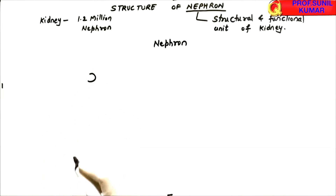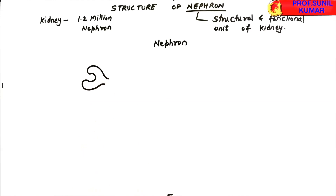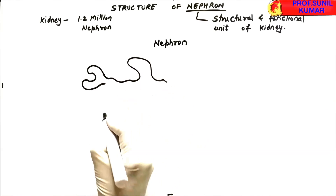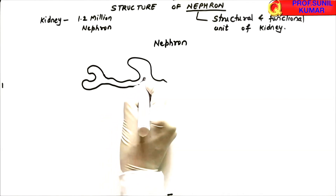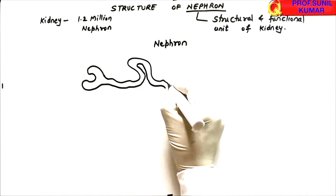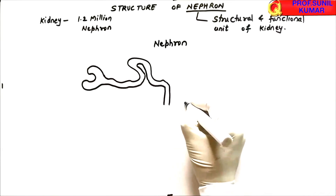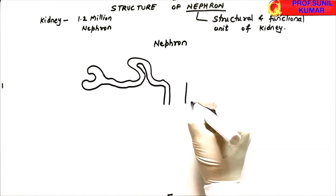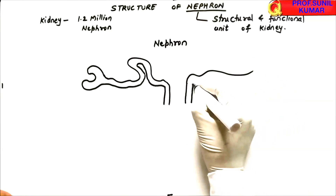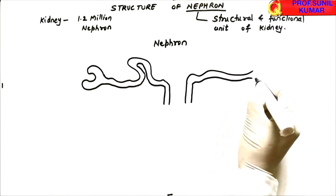We draw a small mirror-image C shape, and to this C we make a double layer — this becomes the Bowman's capsule. Then we extend a tube a little bit bigger; this tube is called the PCT, or proximal convoluted tubule. Bringing it down, the next tube going up is the DCT, or distal convoluted tubule, which is smaller than the PCT.